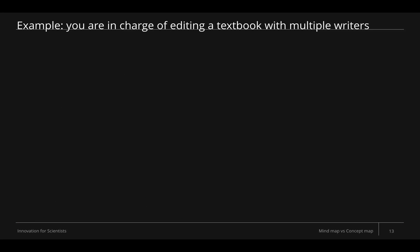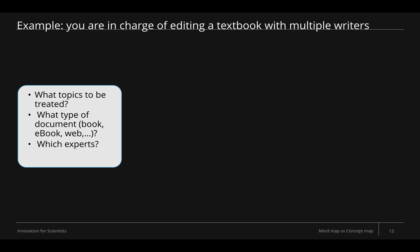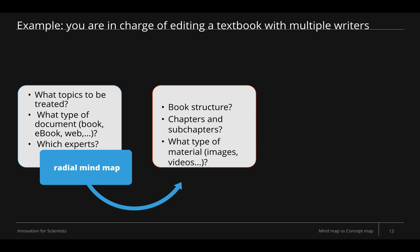Here's an example. You are in charge of creating a textbook with multiple writers. The first step is to decide which topics will be treated, what type of document it is — a book, e-book, or web publication — and which persons you will contact to write the chapters. In this first step, using a radial mind map will allow you to explore ideas to see what the structure of the book will be and what the best support for it should be. When you have a clear view of the different concepts, you can move to defining the book structure — how many chapters, type of sub-chapters, and what material like images and videos should be added. The tree mind map will be much more efficient here because its structure is more organized.